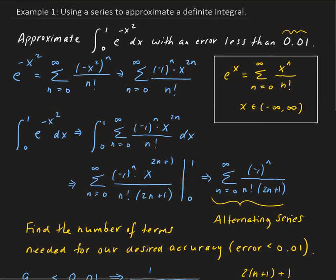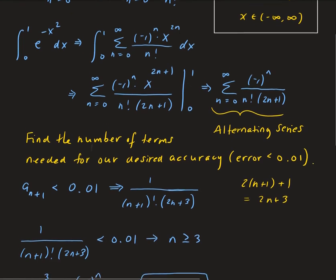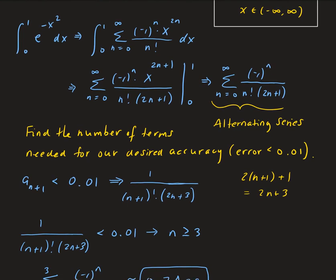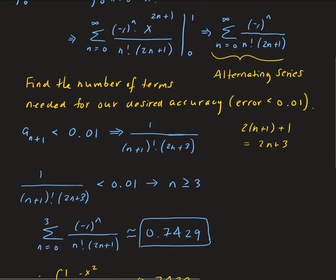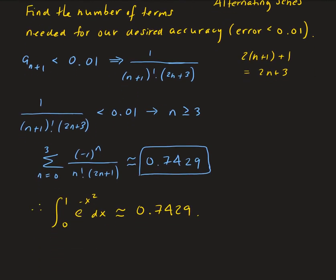To summarize: we started by using the power series for e to the x, which has an interval of convergence for all x. We took that and rewrote the series for e to the minus x squared, integrated the expression, evaluated it from 0 to 1, and then because this is an alternating series, we could bound the (n+1)th term, which tells us how many terms we need for our summation, and we get the result that we need.